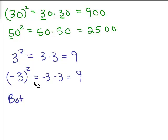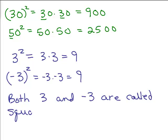Now, if you square a number and you get 9, what this means is that that number that you squared is a square root of 9. So what we have is both 3 and negative 3 are called square roots of 9,